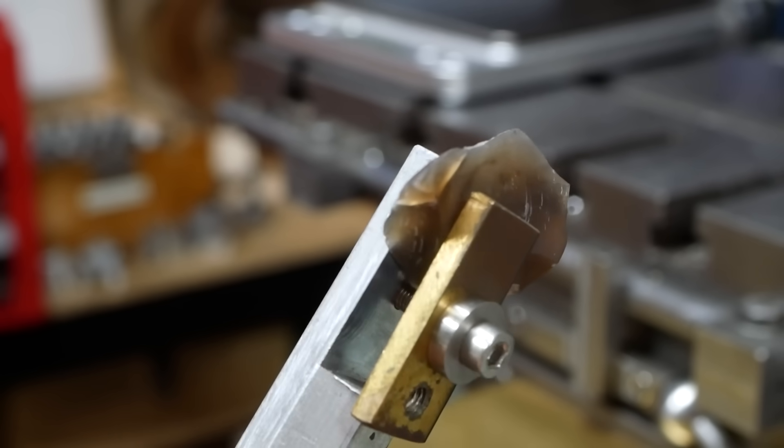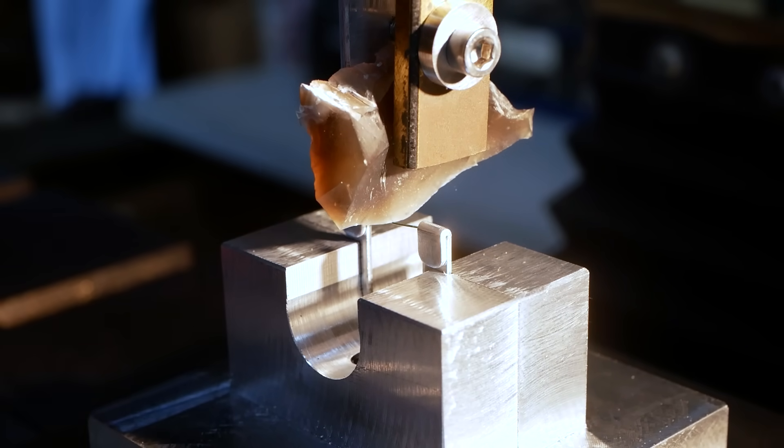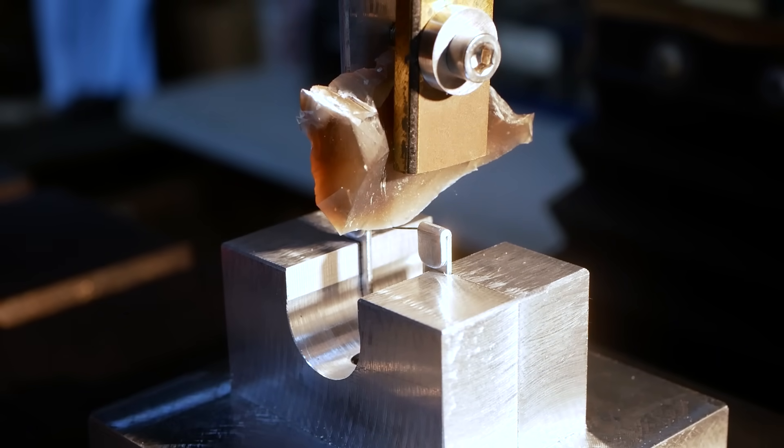Let's test the flint next. The flint breaks through the wire at 230 grams. This seems to agree with the hair-splitting experiment.